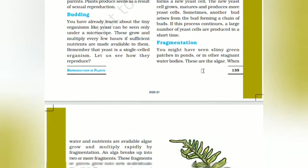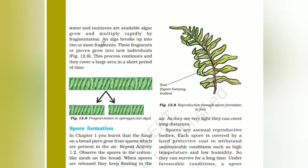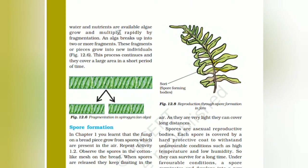If the process continues, a large number of yeast cells are produced in a short time. Fragmentation: you might have seen slimy green patches in ponds or in other stagnant water bodies — these are algae. When water and nutrients are available, algae grow and multiply rapidly by fragmentation. The algae break up into two or more fragments, which grow into new individuals, covering a large area in a short period of time.